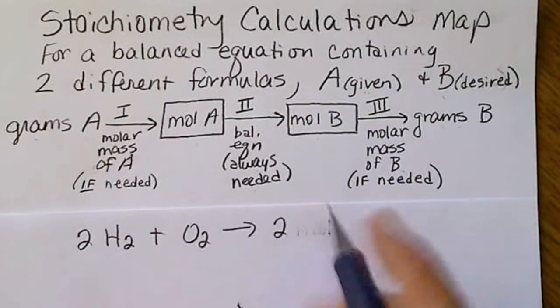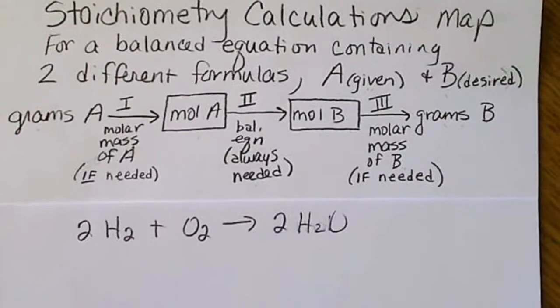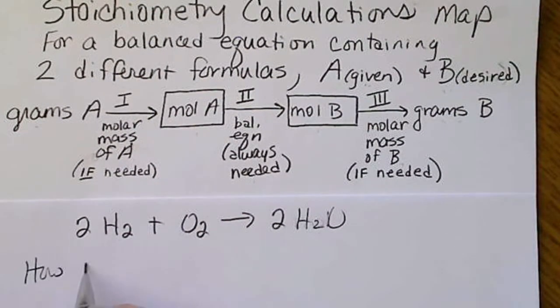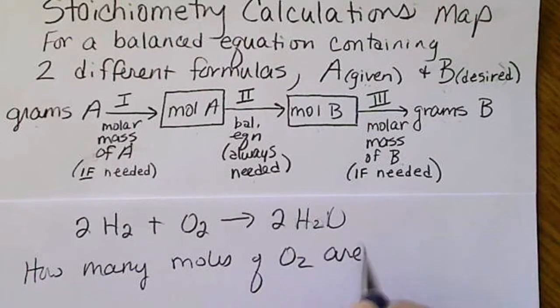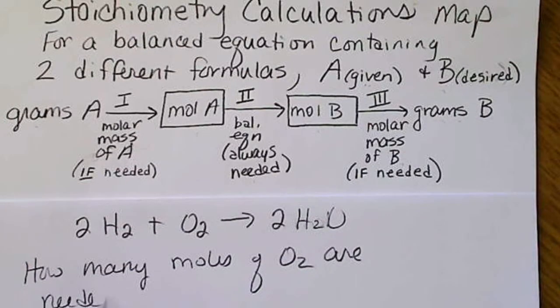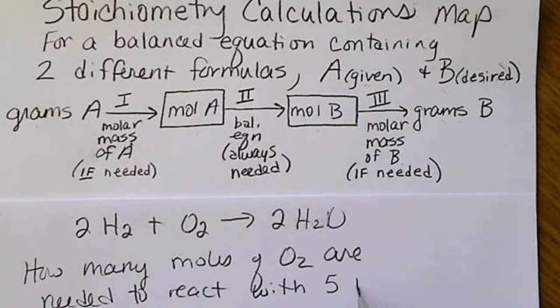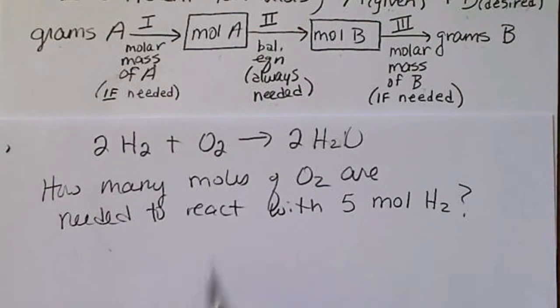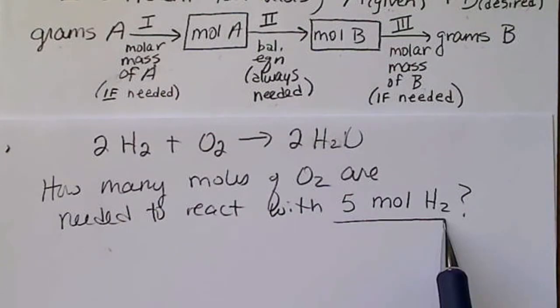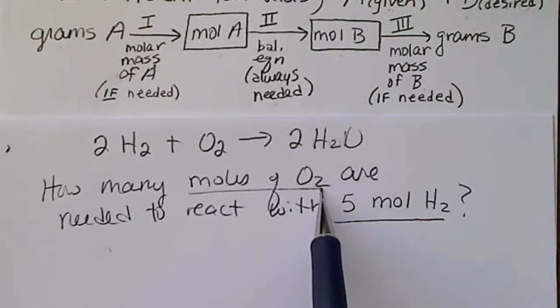Two moles of hydrogen and one mole of oxygen will always make two moles of water, and we're not going to see the word mole written. So if we're asked a question, how many moles of oxygen are needed to react with five moles of hydrogen? So if we look at this example, we need to figure out what we're given and what we're asked for.